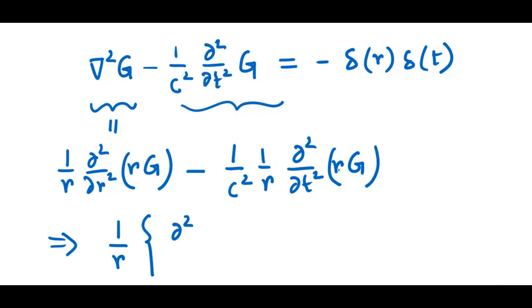So this is fantastic, because our equation can now be written as 1 over R, and then second order derivative with respect to space, minus 1 by C squared, second order derivative with respect to time, acting on this whole thing, R times G, and this is negative delta of R times delta of T.